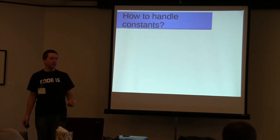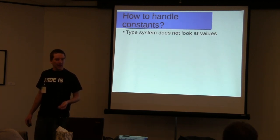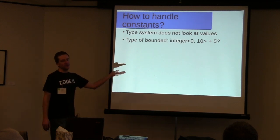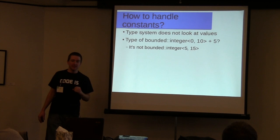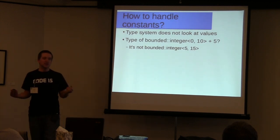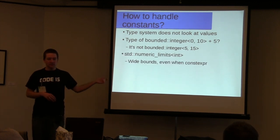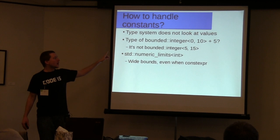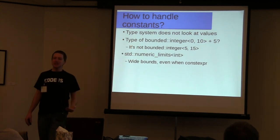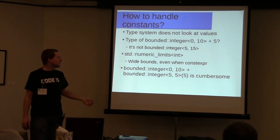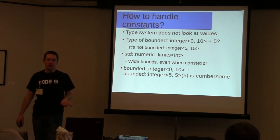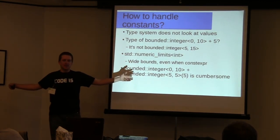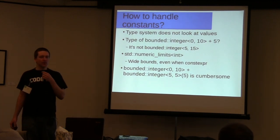One other issue that comes up is how to handle literal constants. The reason this is an issue is that the type system does not look at values. So if you have a bounded integer between 0 and 10 and you add the literal 5 to it, the type of that is not a bounded integer between 5 and 15 — it's actually a bounded integer between approximately plus or minus 2.1 billion, because it uses the numerical limits of int: INT_MAX and INT_MIN. So it gives very wide bounds even though all of this can be done at compile time. The type system itself does not know about it. Constructing a bounded integer for each literal can get cumbersome quickly.